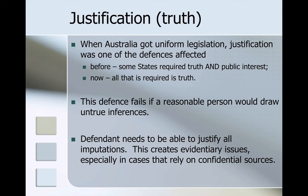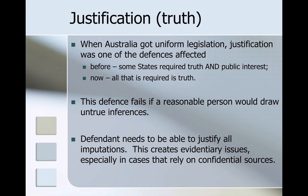When Australia got the uniform defamation legislation, justification was one of the defences affected. Prior to these uniform defamation laws, some states required not just truth but also that the publication be in the public interest. This changed with the uniform defamation laws — now all that is required to rely on the defence of justification or truth is indeed truth. There is no additional element of public interest. This defence will fail if a reasonable person would draw untrue inferences, and the defendant needs to be able to justify all imputations, which can create quite tricky evidentiary issues especially in cases that rely on confidential sources.